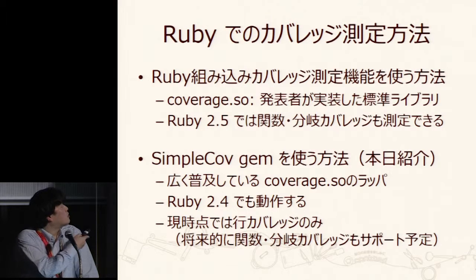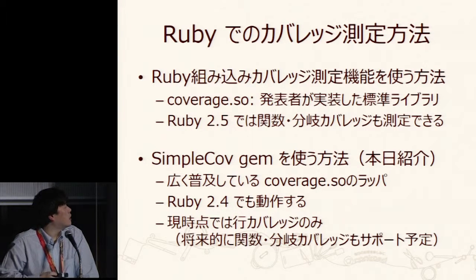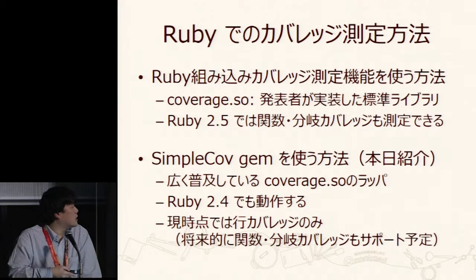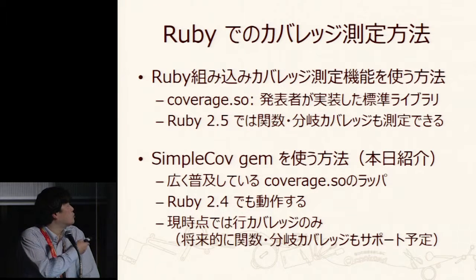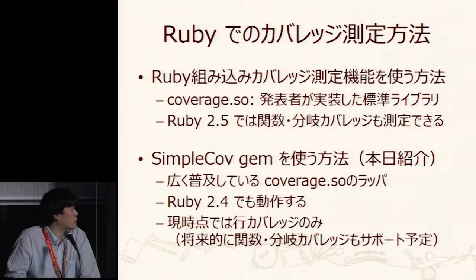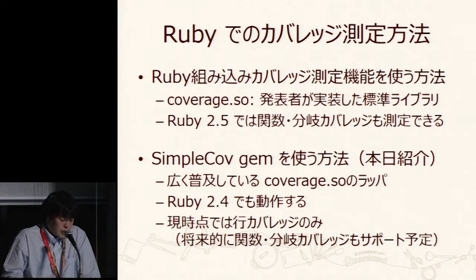SimpleCov is a coverage.so wrapper which is widely used. It works on Ruby 2.4 or even 2.2. Up to Ruby 2.4, only statement coverage is supported. But if Ruby 2.5 coverage is available, I think functional coverage and branch coverage will also be supported in SimpleCov in the future.